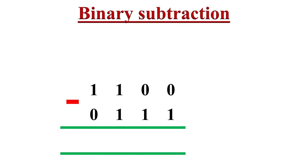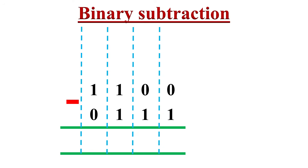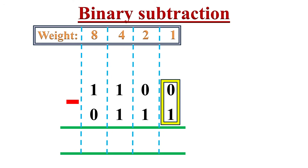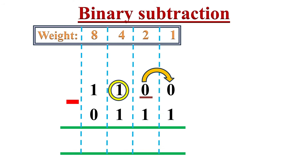Now let's move to the next example. To subtract these two binary numbers, we will follow the column by column method. Let me mention the weights of each column. Subtraction must start from the 1's column. Here it is 0 minus 1. Since 0 is lesser than 1, we need to borrow from the 2's column. But in the 2's column there is also a 0, so we cannot borrow from it. Hence we need to borrow from the next column — the 4's column — where we have a 1. We will borrow this 1 to the 2's column.